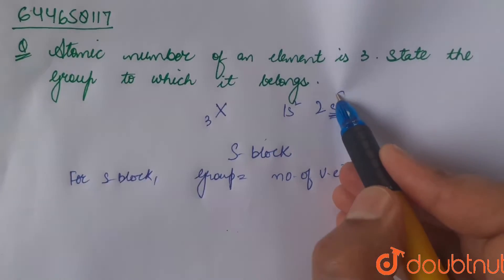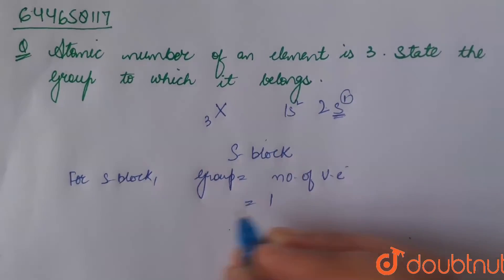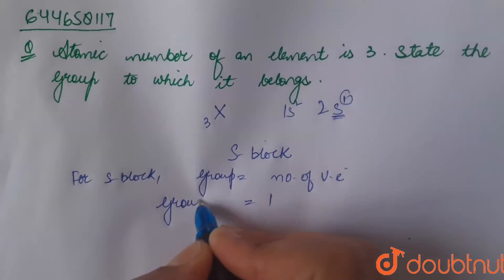As here, we have one valence electron. So here, the group number of the element having atomic number 3 is 1.